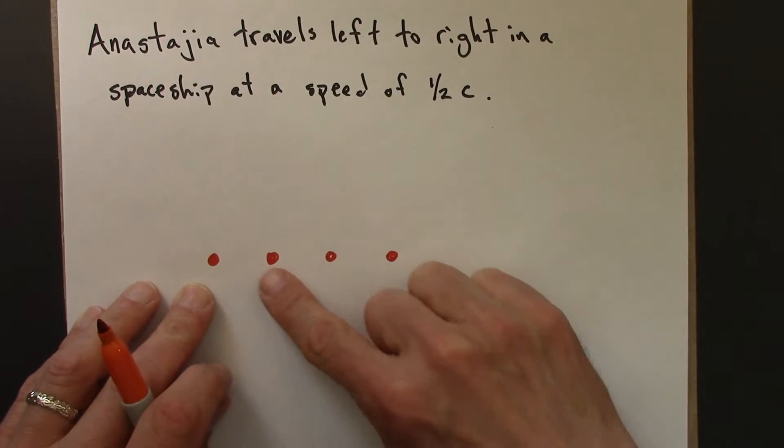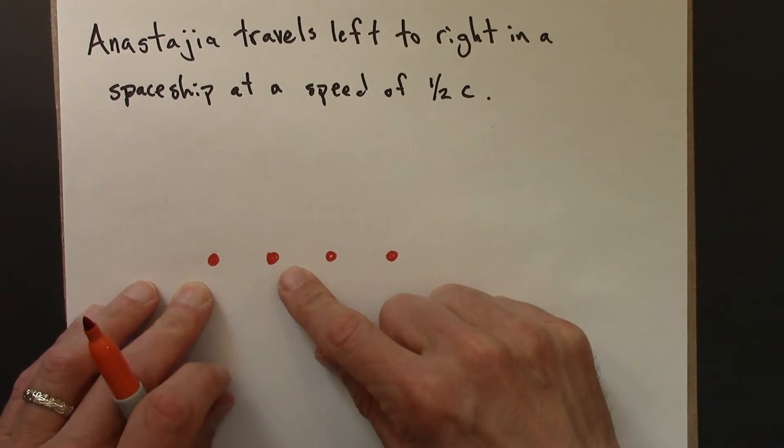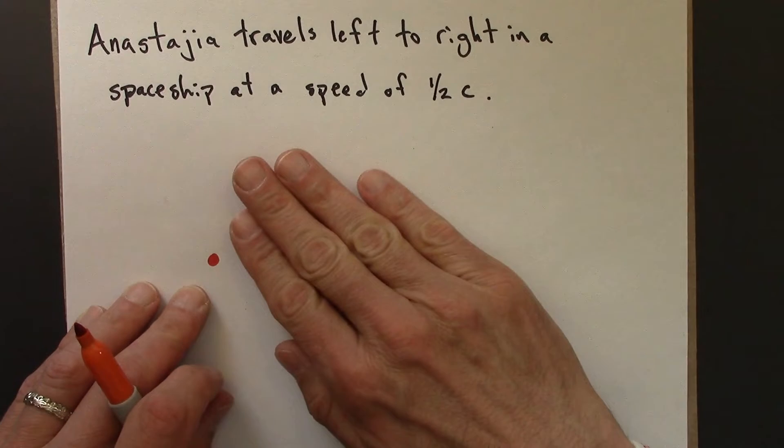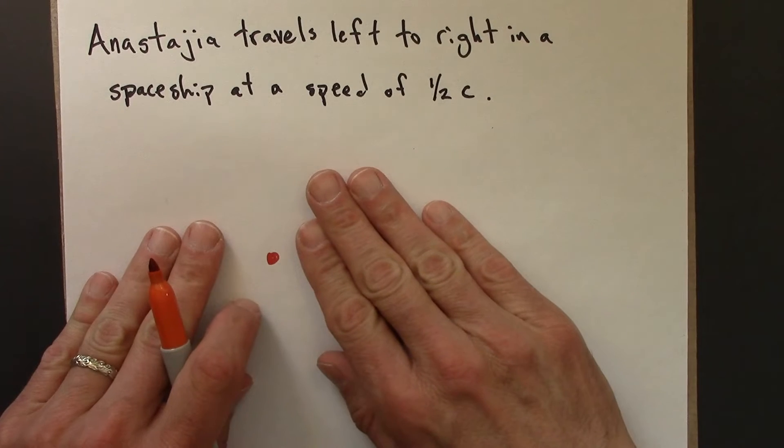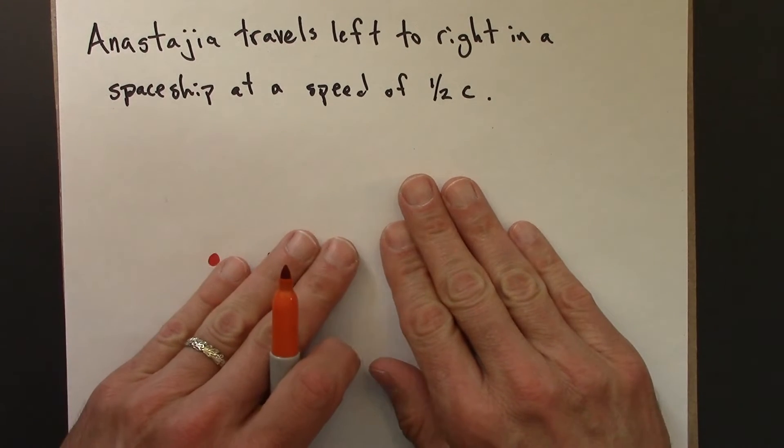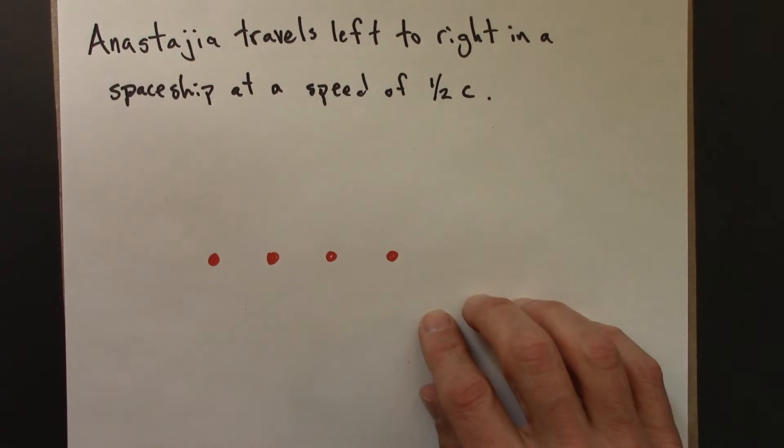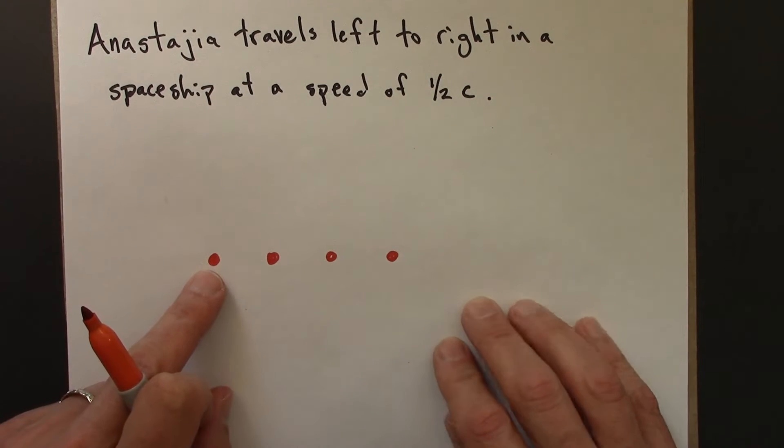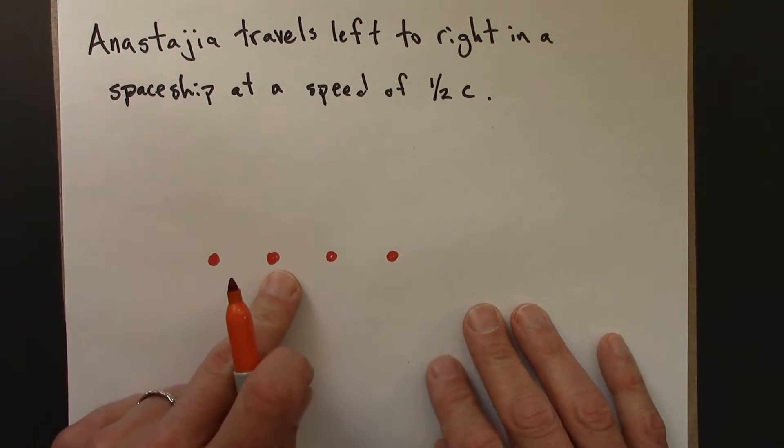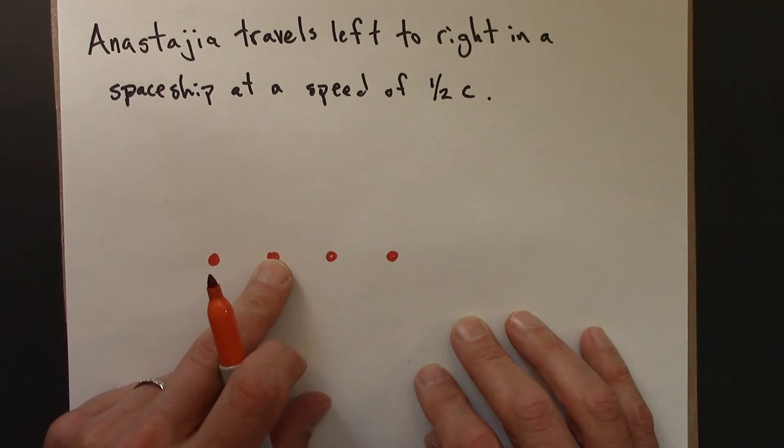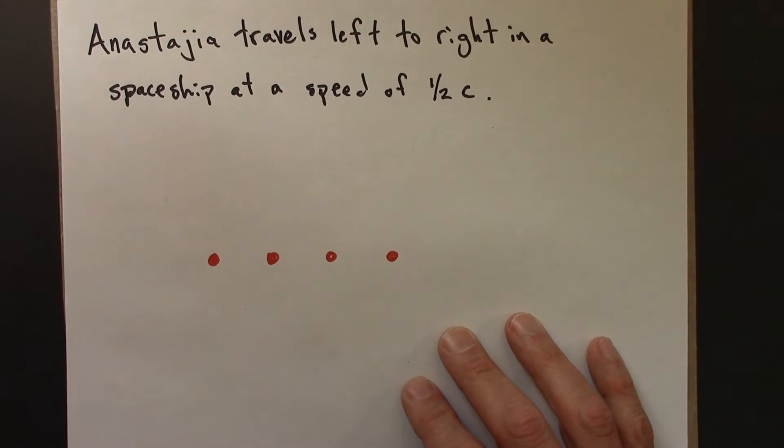So here's the picture. Imagine the spaceship blinks every second. So we see a blink here, a blink there, a blink there, and a blink there. So every second the spaceship blinks. And during that second of time, the spaceship will have gone a half second of distance.